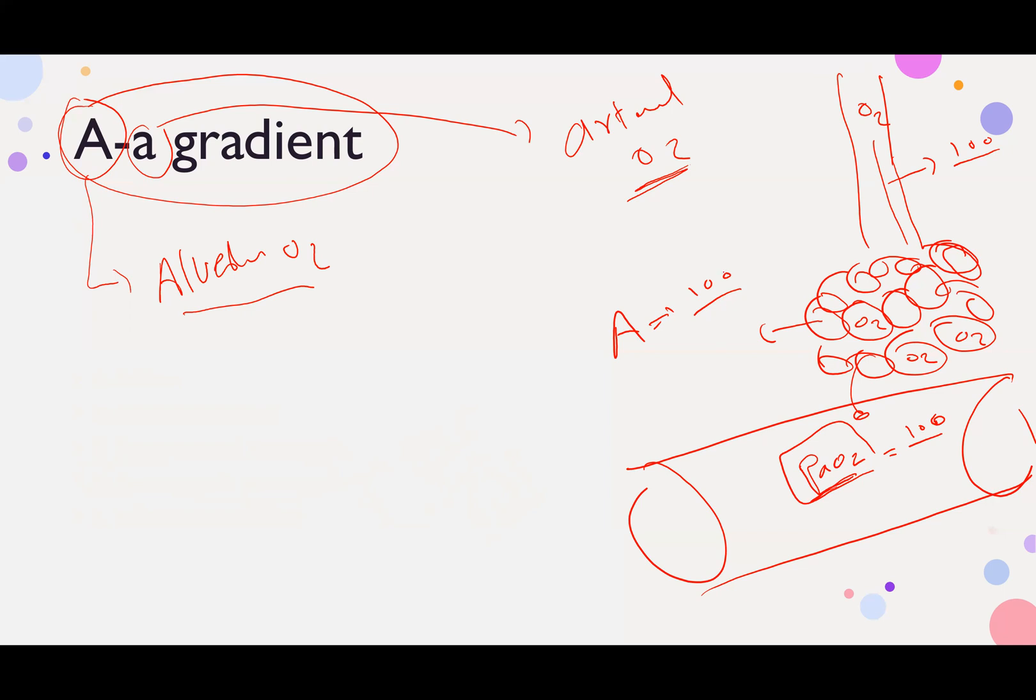Let's suppose what goes into the blood is zero, just for simplicity purposes, because you have a diffusion defect. Let's suppose the diffusion defect is extremely severe.